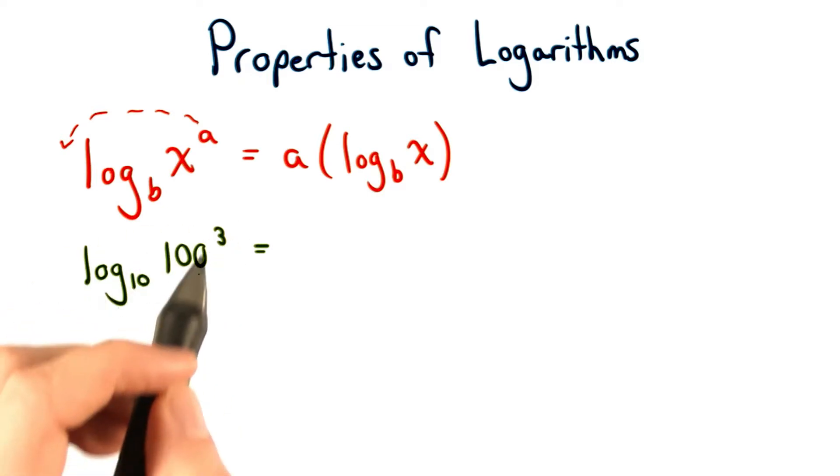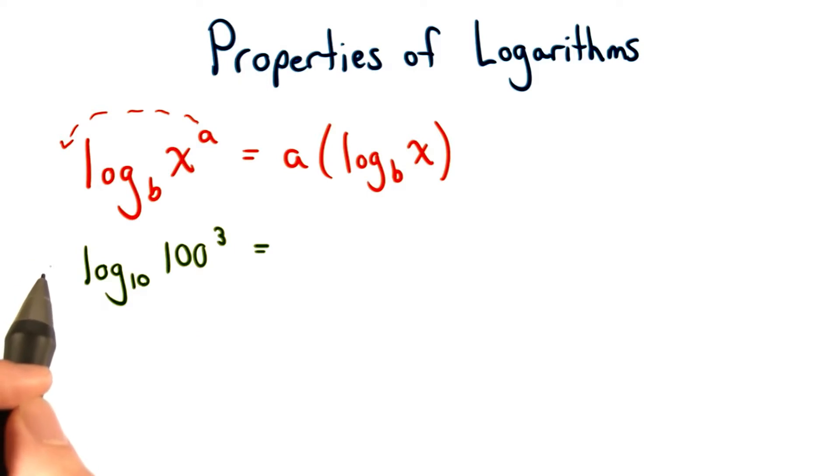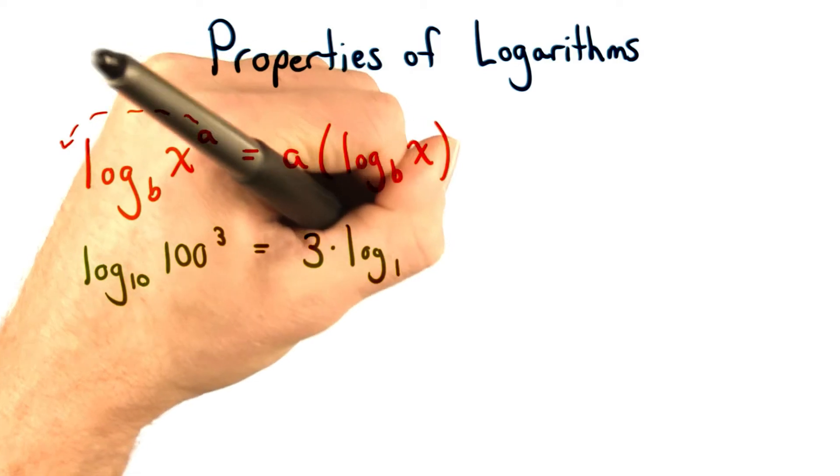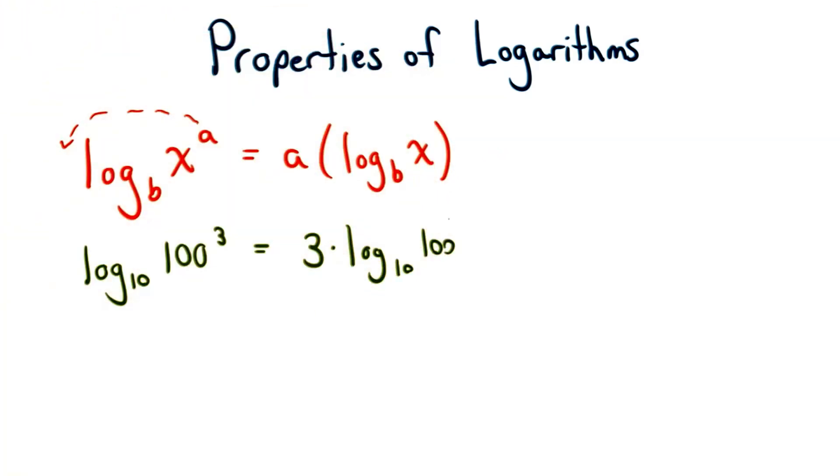we can rewrite this. We can bring this third power down in front of our logarithm, so we'll have 3 times the logarithm of base 10 of 100. Now, I usually put this in parentheses so I understand that it's 3 times this quantity.